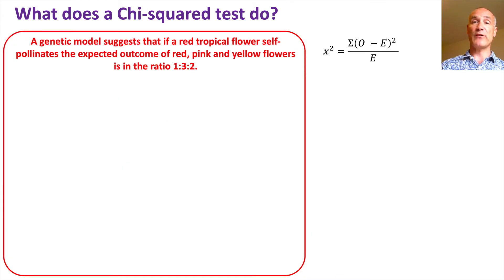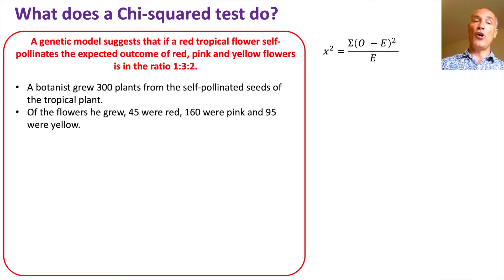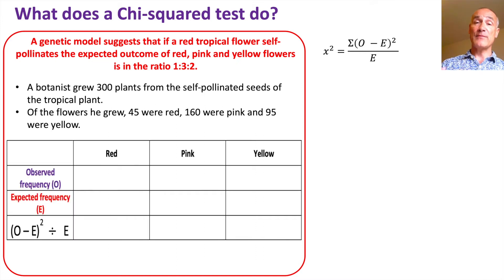Let me give you just one more example before you practice questions yourself. It says a genetic model suggests that if a red tropical flower self-pollinates, the expected outcome of red, pink, and yellow flowers is in the ratio of 1 red to 3 pink to 2 yellow. A botanist grew 300 plants from the self-pollinated seeds of the tropical plant. Of the flowers he grew, 45 were red, 160 were pink, and 95 were yellow. Our hypothesis is that there should be no difference between the observed frequency and expected frequency. If that's the case, that genetic model is correct.